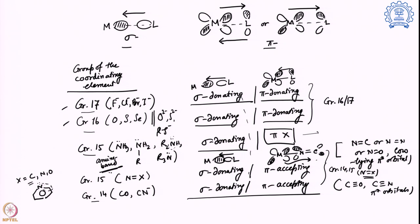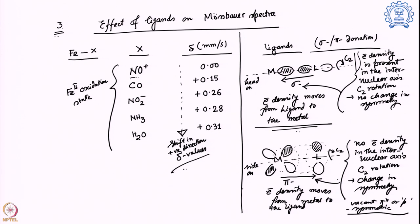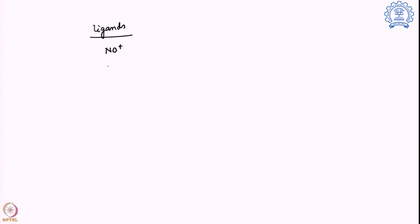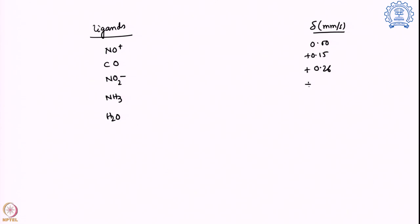With that information, let us move back and look at all the systems again. The ligands are NO+, carbon monoxide, nitrite, ammonia, and water. Their delta values are: 0, +0.15, +0.26, +0.28, and +0.31 mm/s respectively. We are now trying to understand why these ligands show these particular isomer shifts, and the answer is hidden in their character.